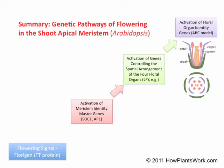The FT protein then travels from the leaves to the shoot apical meristem via the phloem. The FT protein is thought to activate another protein called FD in the shoot apical meristem, which in turn triggers the activation of the meristem identity master genes.